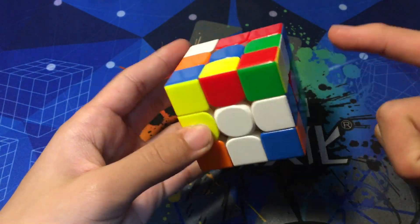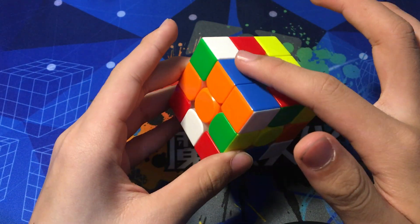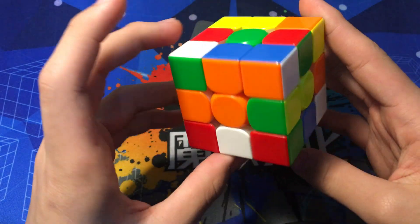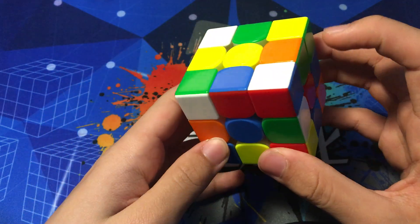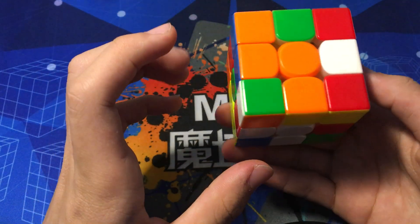His cross pieces are here, here, here, and here, and notably we have this free pair right over here that we just want to preserve during cross, and also this corner and this edge, which we'll also try to set up into a favorable position.